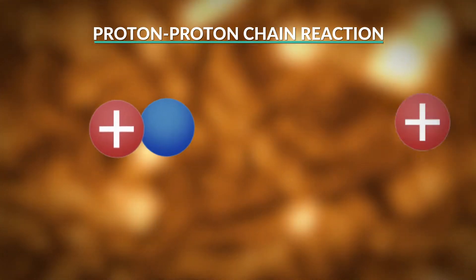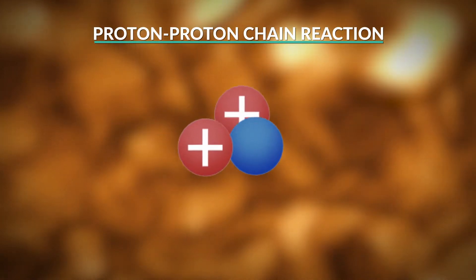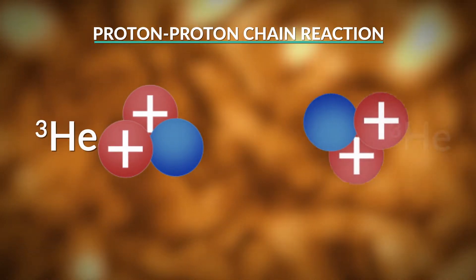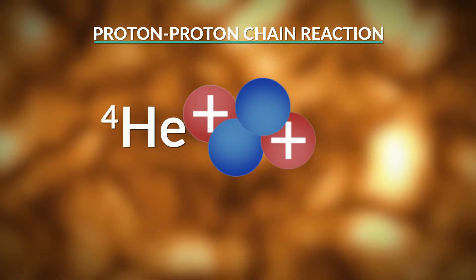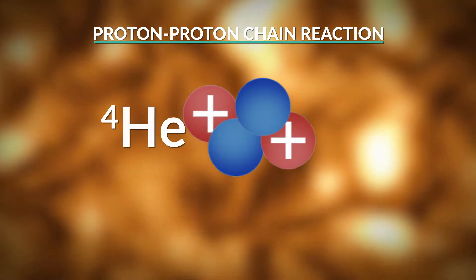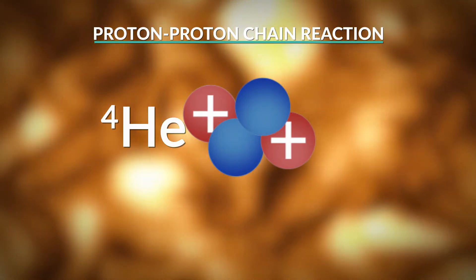Over the course of three separate reactions, hydrogen nuclei become fused into a helium nucleus, with huge amounts of gamma radiation released. This is called a proton-proton chain reaction, also known as stellar nucleosynthesis.